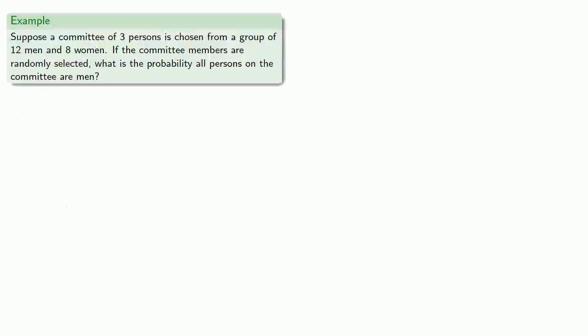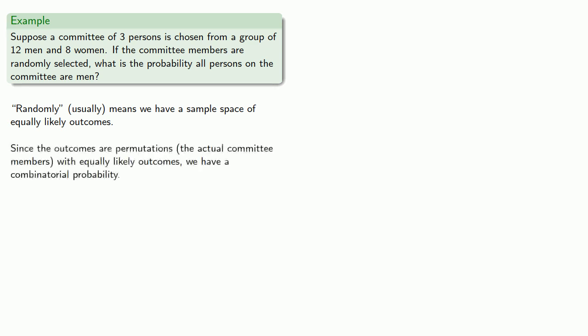For example, suppose we're selecting a committee of 3 persons from a group of 12 men and 8 women. If the committee members are randomly selected, what is the probability that all persons on the committee are men? Randomly usually means we have a sample space of equally likely outcomes. Since our outcomes are permutations, the actual committee members, with equally likely outcomes, we have a combinatorial probability.